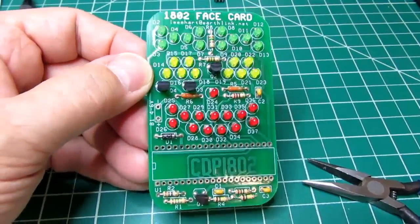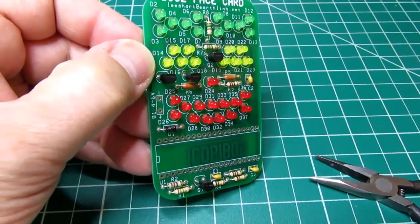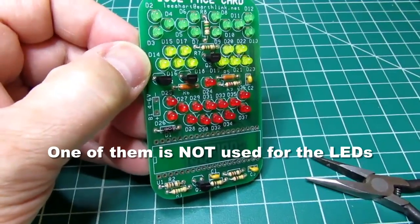Then there are four 2N2222 transistors. These have a proprietary marking on them, but that's what they are.